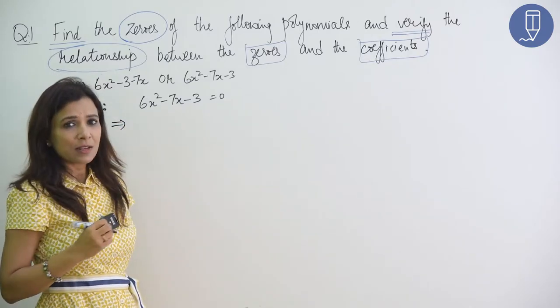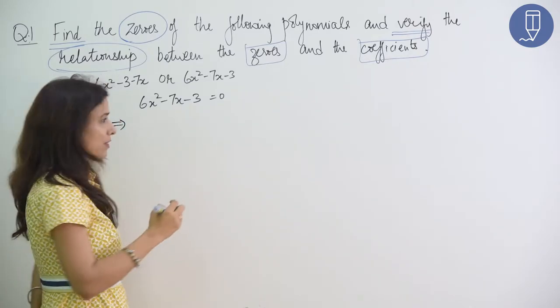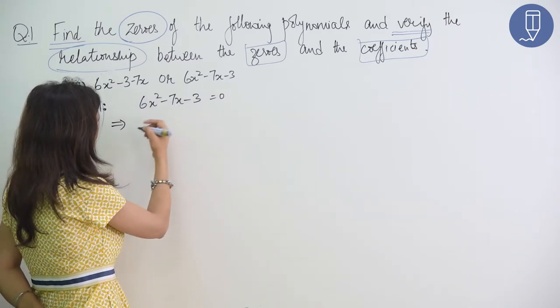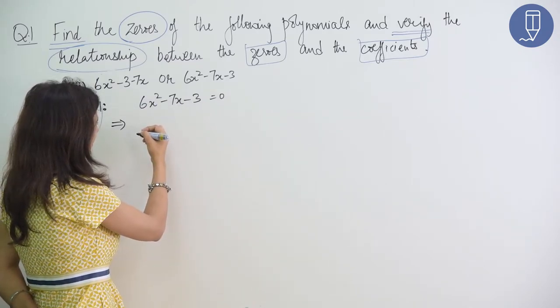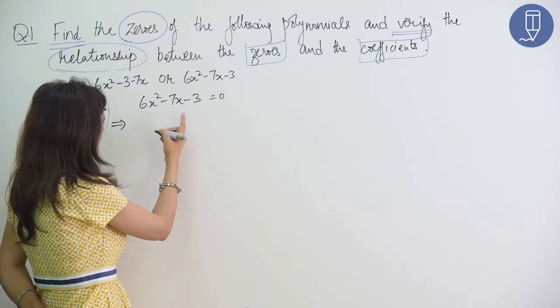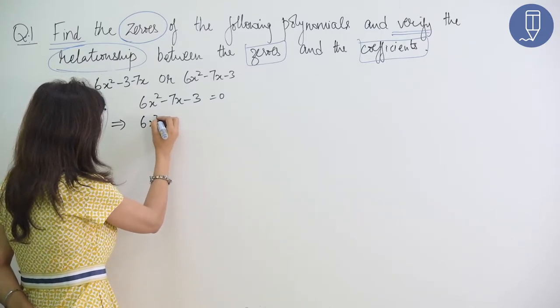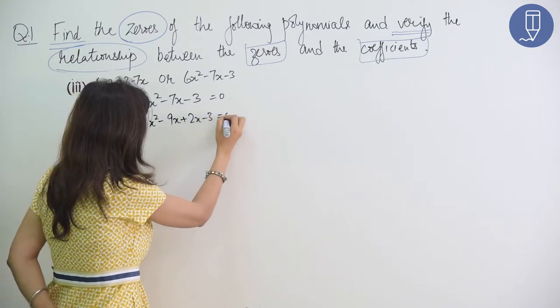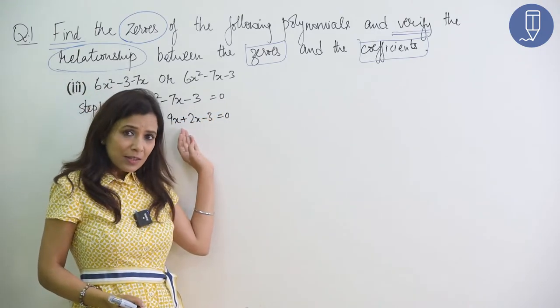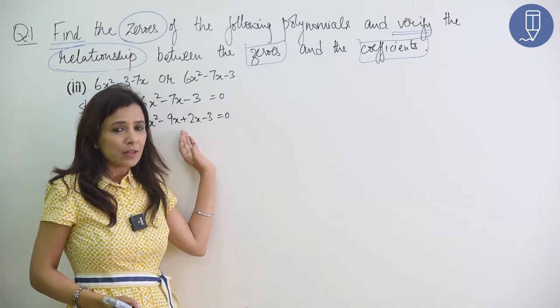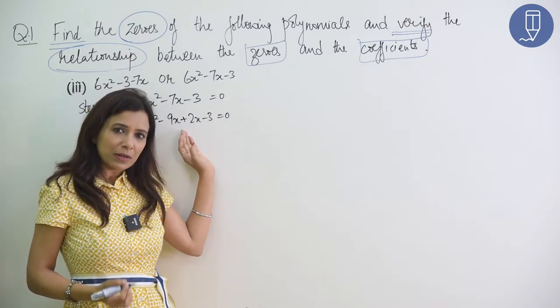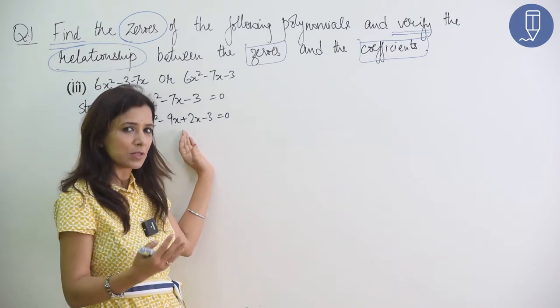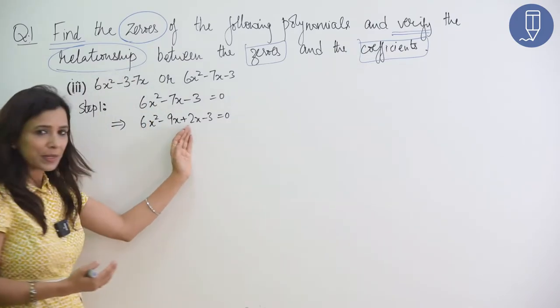Now, second step, yes, factorization. So, we will do here. 6x²-9x plus 2x minus 3 equal to 0. This is splitting the middle term. I have mentally done it. Because in practice, it will come too. And if you have any problem, you can ask us. Okay? We are going to factorize with splitting the middle term.